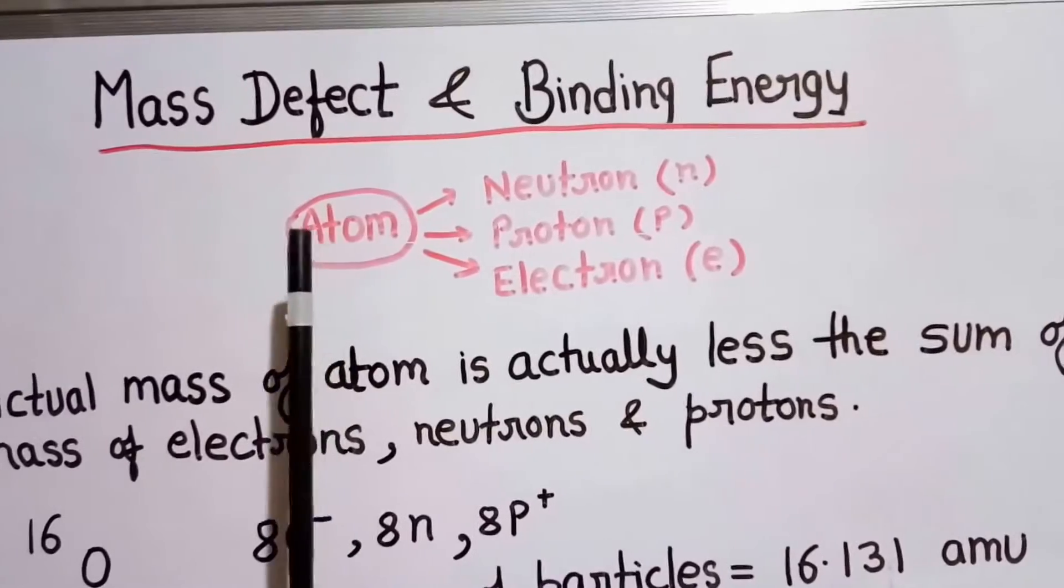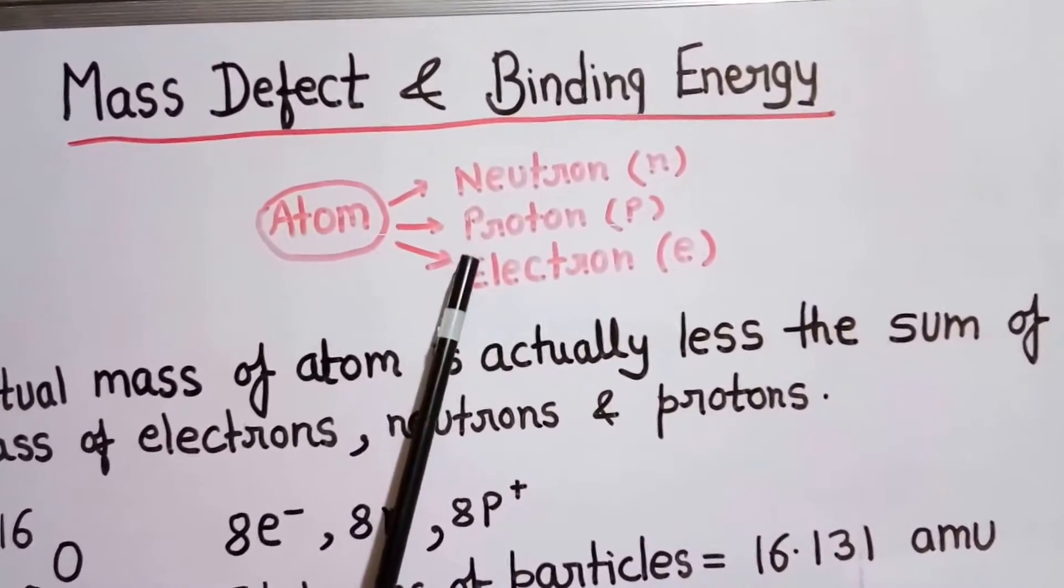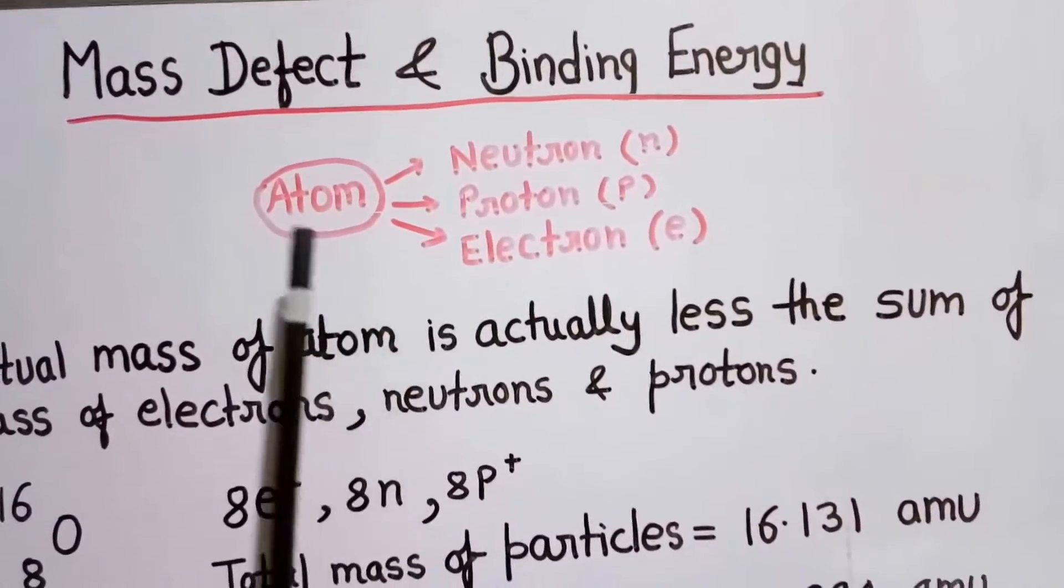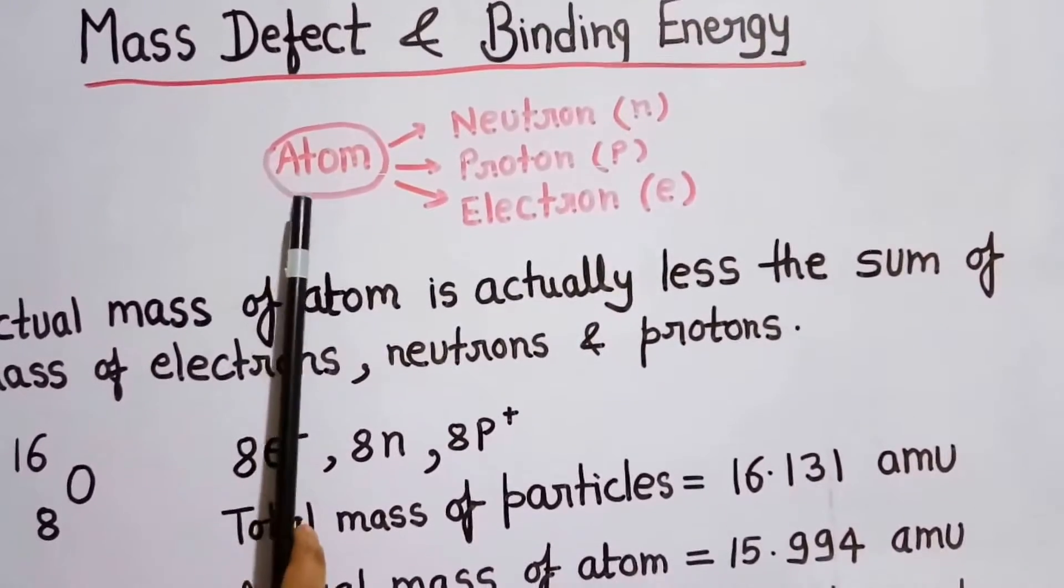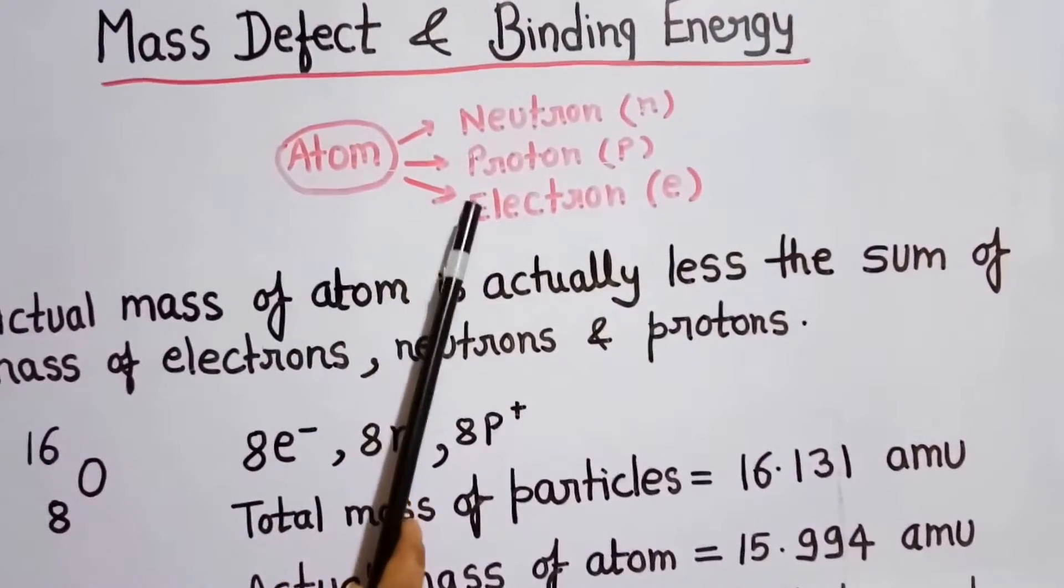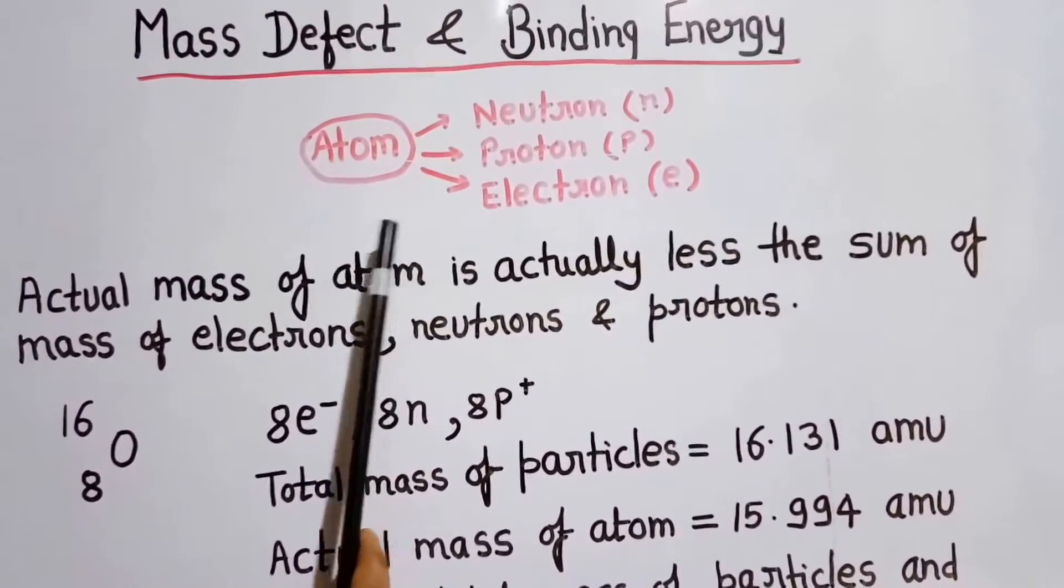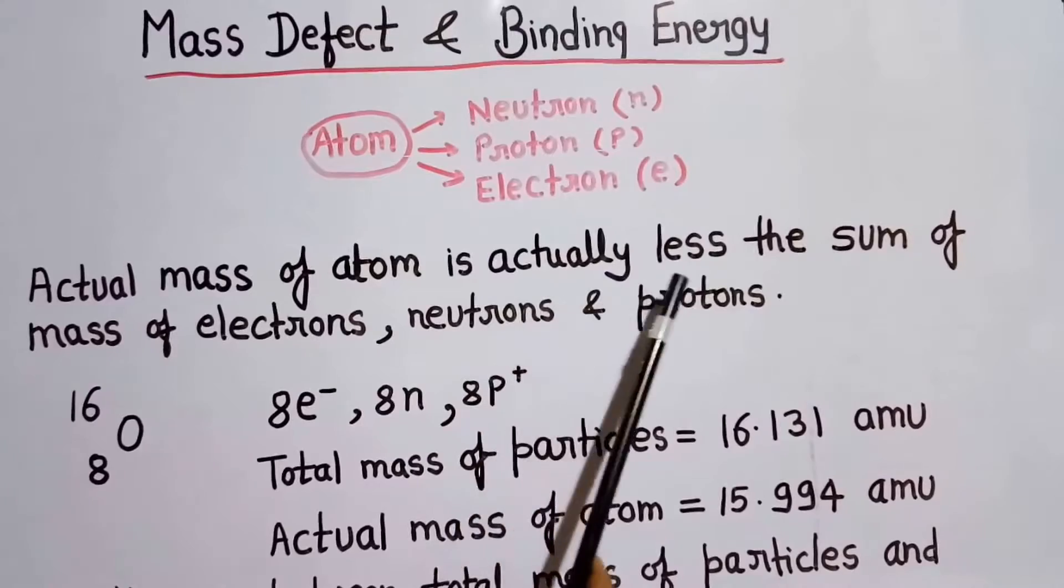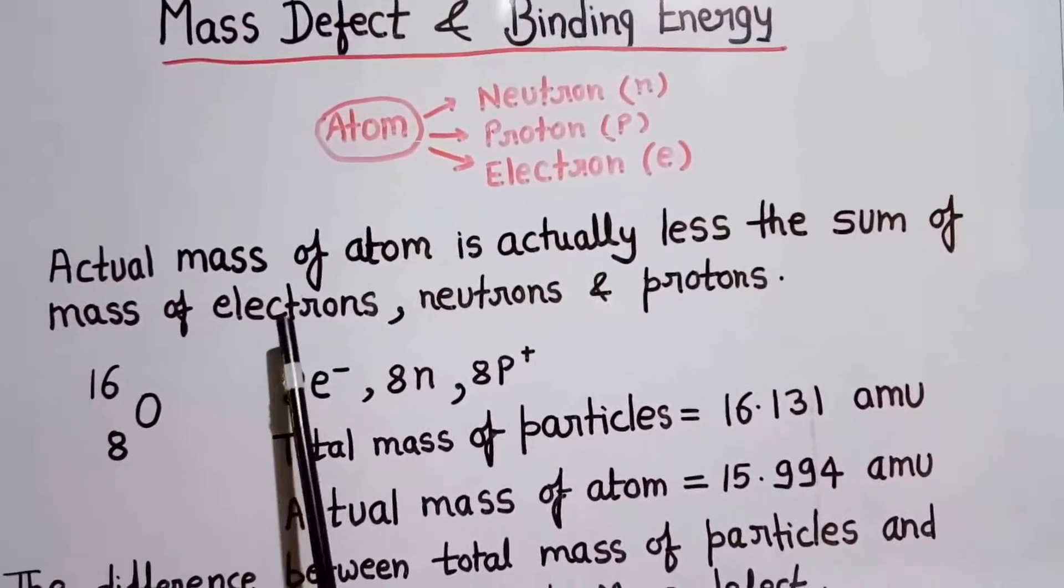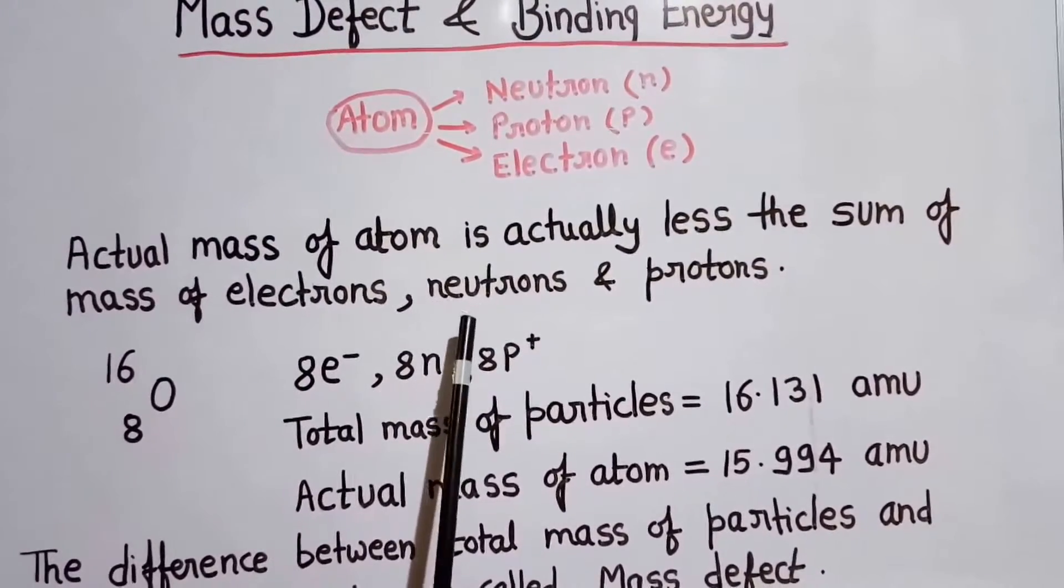As we know, each atom consists of neutrons, protons and electrons. So the total mass of the atom should be equal to the mass of neutrons, protons and electrons. But actually, it does not happen so. The actual mass of atom is actually less than the sum of mass of electrons, protons and neutrons.